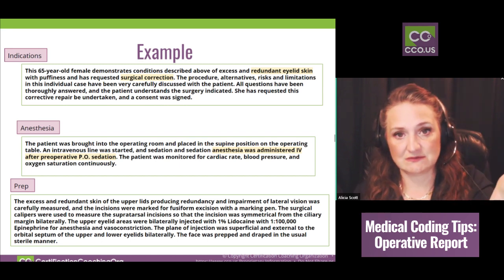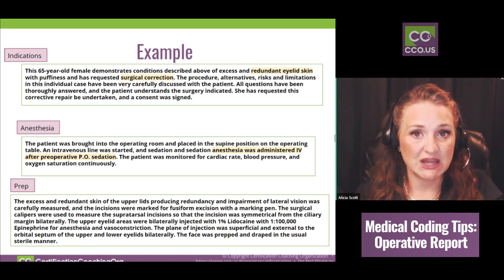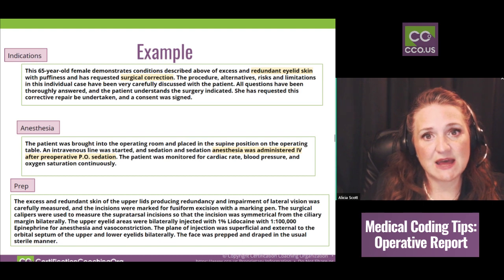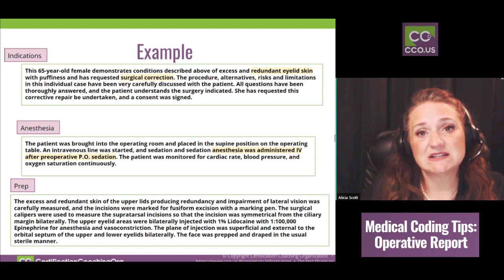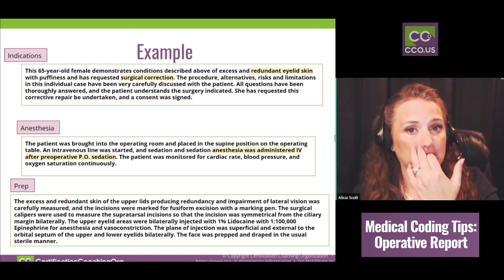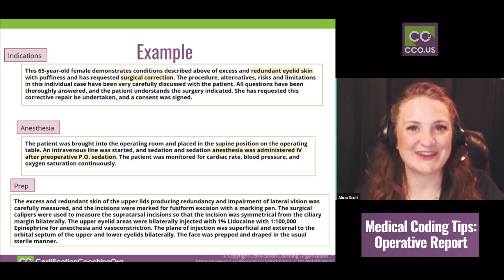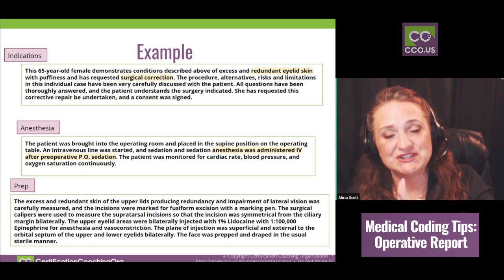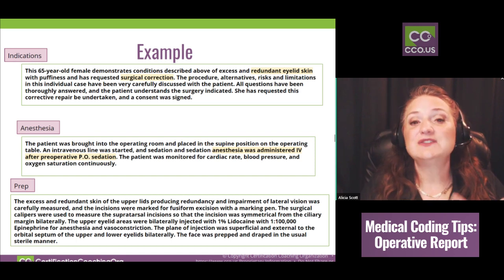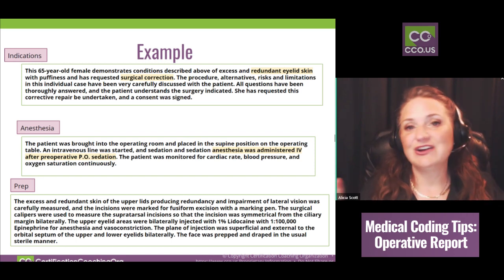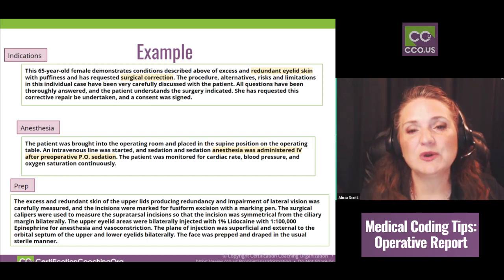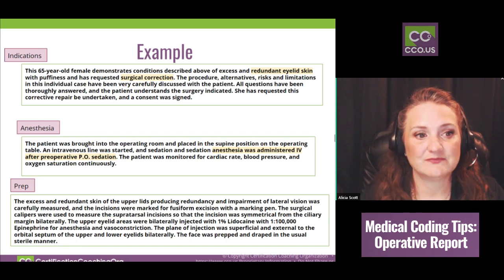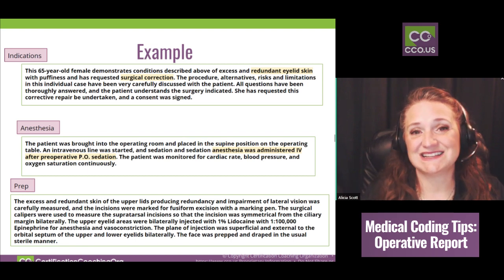The type of anesthesia was already listed at the top, so in this section we're just verifying it was administered. Note that the anesthesiologist usually places the IV before going in since they maintain it and administer the drugs. After the anesthesia section comes the prep section — and here I didn't highlight anything because all of it is fodder. We already know they're working on the eyes, we know they're anesthetizing the patient. None of this section is important to a coder for the most part — it's content we skip over.